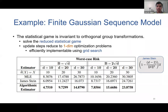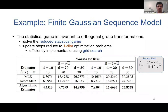Experimental results for the Gaussian sequence model: the table compares the worst-case risk of our algorithmic estimators with baselines — the standard estimator (predicts theta as X), MLE, and the James-Stein estimator — for various values of B (domain size) and D (dimension). In terms of worst-case risk, we perform better than MLE and the standard estimator, and also show slightly better performance than the James-Stein estimator.